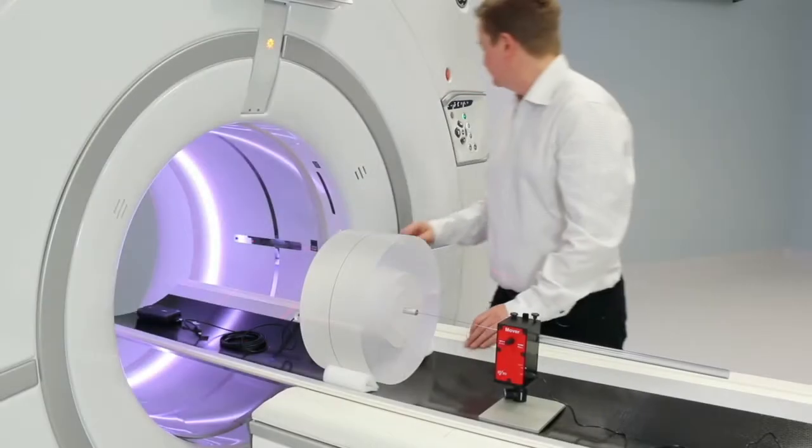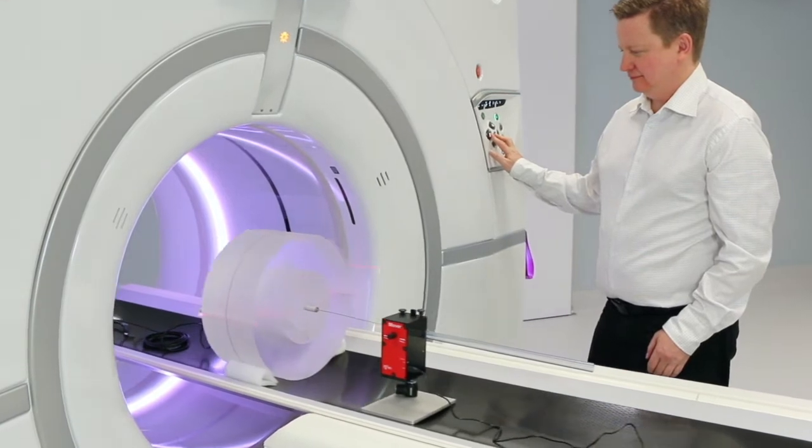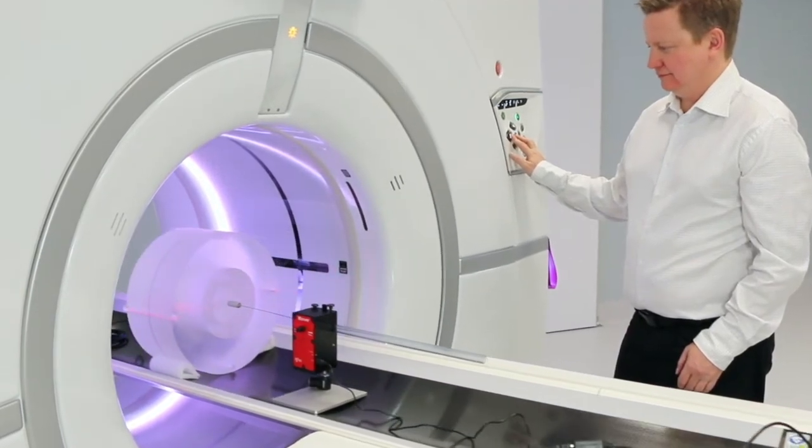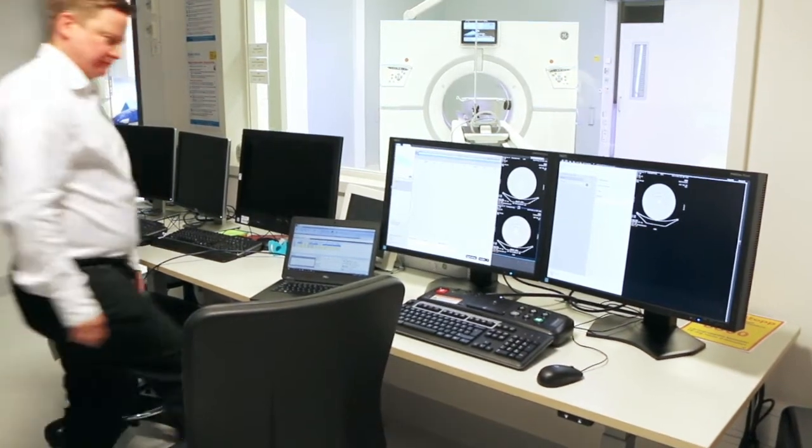When using the mover together with a CT-DI Phantom we recommend that you use a collimation of 40mm or lower. If you want to measure on wider collimations we recommend that you measure free in air.